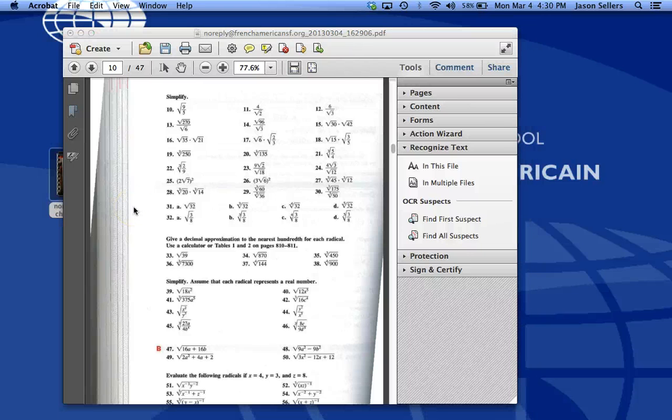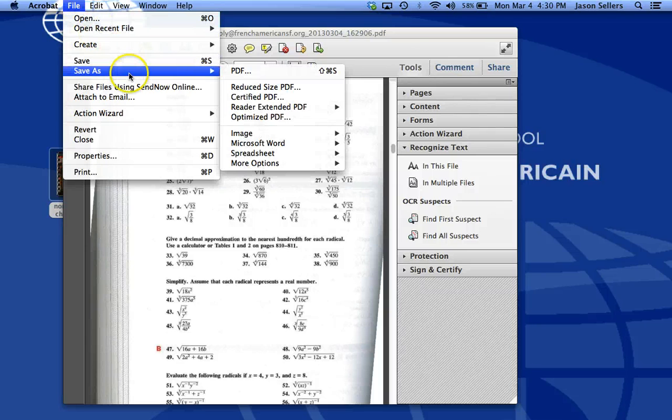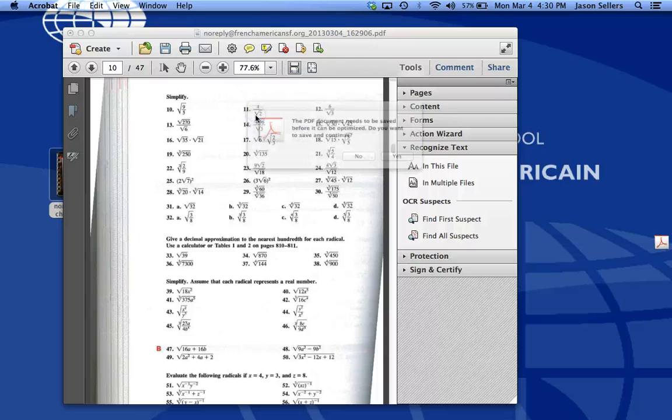Now the last thing I want to do is save my file. If I save this as it is right now, this is about a 40-page document. It'll probably be anywhere between 10 and 20 megabytes. I want to try to get it as small as I can if I'm going to be distributing this. So I'm going to go up to File, Save As. And Reduced Size PDF will make it smaller, but Optimized PDF will make it even smaller than that. So I'll click Optimized PDF.